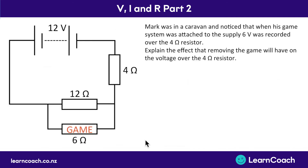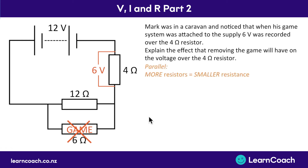Now let's look at an exam question. Mark is in a caravan. He notices that when he attaches his game into the circuitry, there's a 6 volt reading across the 4 ohm resistor. We need to explain what removing this game will do to the voltage across that 4 ohm resistor. The key idea is that removing a resistor from parallel means less resistors in parallel, which leads to a larger resistance overall.